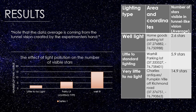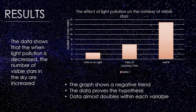These are the results. There is a data table to the right and a graph on the bottom left of the slide. Please note that the data average is coming from the tunnel vision created by the experimenter's hand. The data shows that when the light pollution is decreased, the number of visible stars in the sky increases. There is a graph on the upper right-hand corner of the slide, and that graph shows a negative trend, which also proves the hypothesis. An observation that was made was that the data almost doubles within each variable.